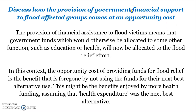Explain how the provision of government financial support to flood-affected groups comes at an opportunity cost. The provision of financial assistance to flood victims means that government funds, which could have been used in other areas, are now being devoted towards the flood victims. This money could have been spent towards education or health, but it is being used for flood relief. The opportunity cost is whatever we consider to be the next best alternative use of that money. Don't say that all these things are the opportunity cost — just identify the next best alternative. Whatever area we value as the next best alternative is the opportunity cost.